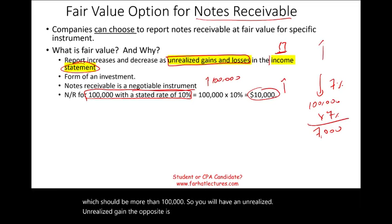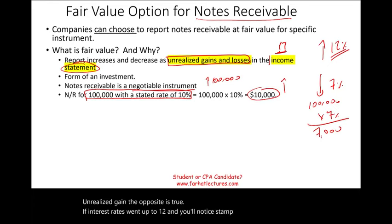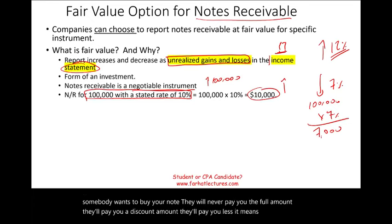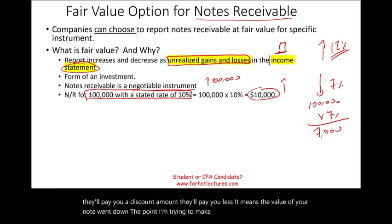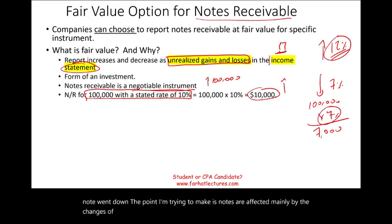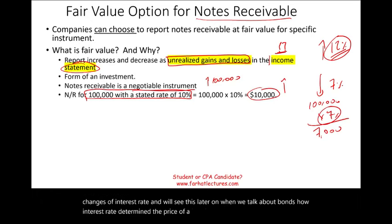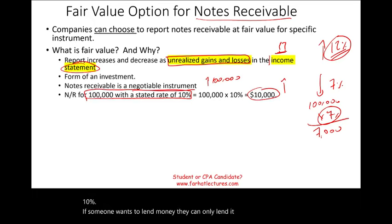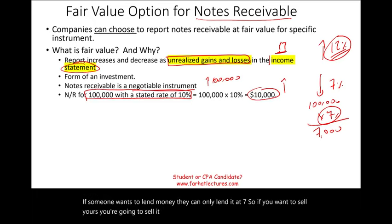The opposite is also true. If interest rates go up to 12% and your note is paying 10%, someone wanting to buy your note will never pay you the full amount — they'll pay you a discounted amount, less than face value. The value of your note went down, giving you an unrealized loss. The point is that notes are affected mainly by changes in interest rates, and we'll see this again when we discuss bonds.